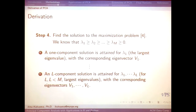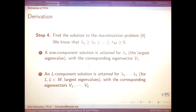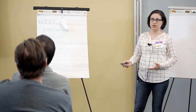Now that we know that, with the singular value decomposition we get the lambdas, which are returned in decreasing order — the first one is the largest, the second is the second largest, and so on. Because we're maximizing the variance, if we only need to find one component, we just find the eigenvector associated with the largest eigenvalue. If we want a two-component solution, we take the eigenvectors associated with the two largest eigenvalues.